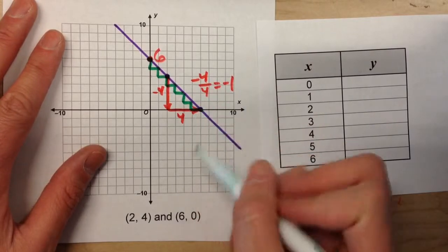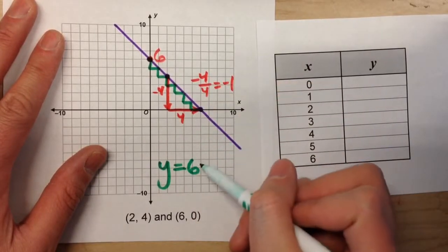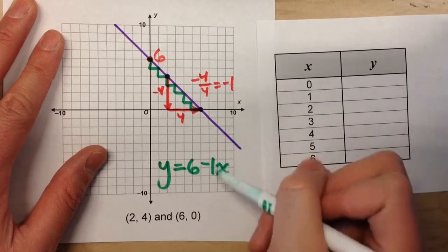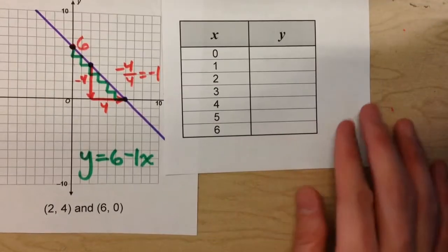So our equation should be y equals 6 minus 1x. Now, the second method we learned is with a table.